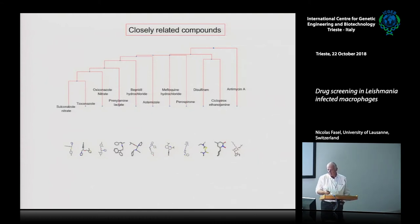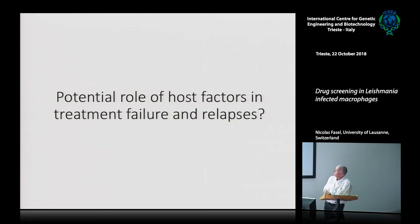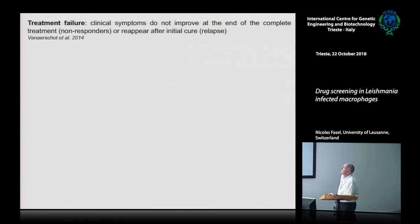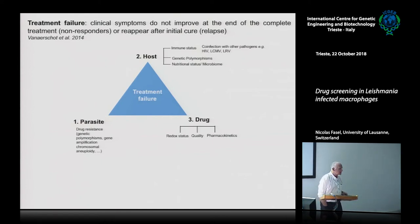What we have to consider — as Paul mentioned — is the potential role of host factors in treatment failures and relapses. Treatment failure is defined as clinical symptoms not improving at the end of complete treatment (non-responders), or symptoms reappearing after initial cure (relapses). Most people study the parasite side — drug resistance via genetic polymorphism, mutations, gene amplification, or chromosomal aneuploidy.